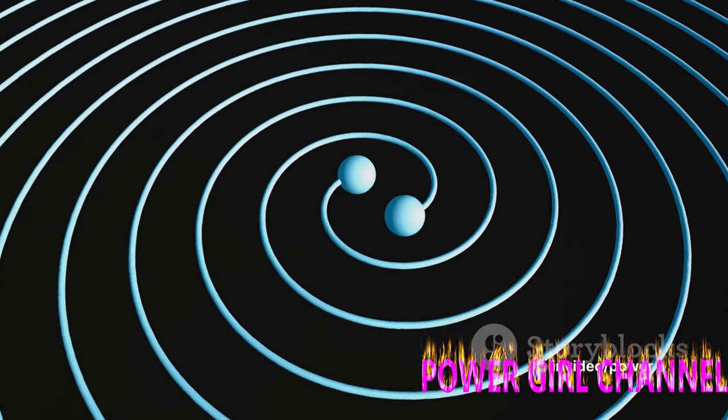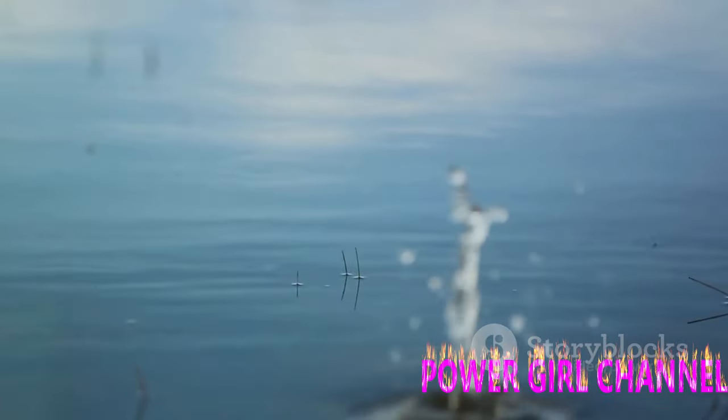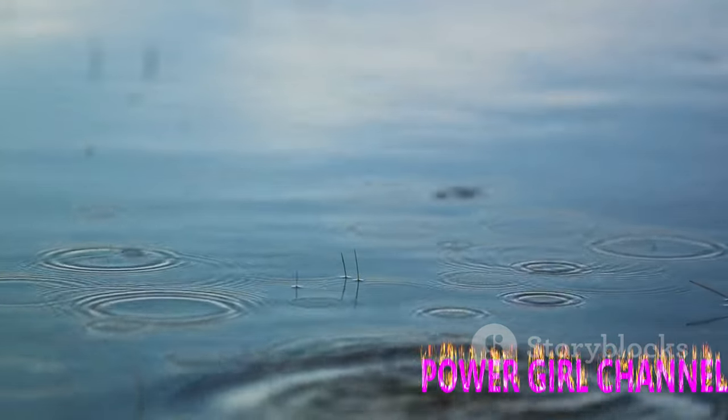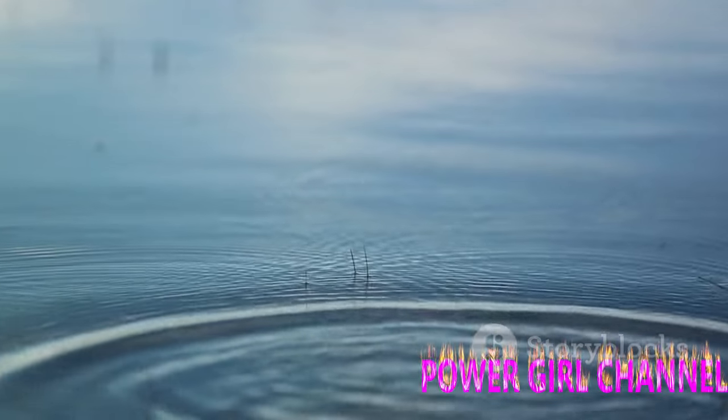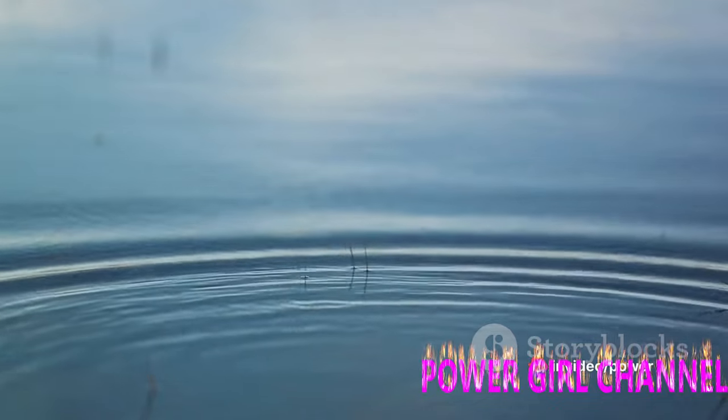Gravitational waves are ripples in the fabric of space-time, caused by some of the most violent and energetic processes in the universe, such as colliding black holes or neutron stars. Imagine tossing a stone into a still pond. The stone disrupts the water, creating ripples that spread out across the pond.